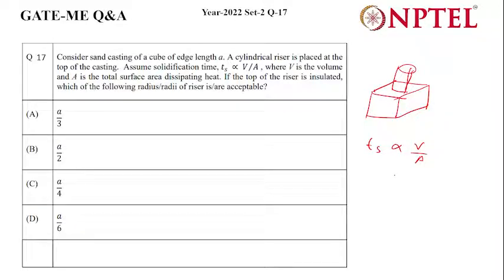So it is given that your ts is directly proportional to v by a. For a cylindrical top riser, optimum conditions are h equals d by 2 equals r.